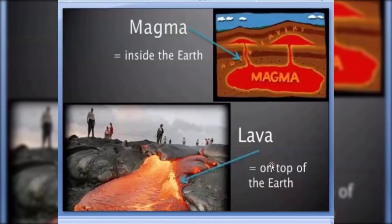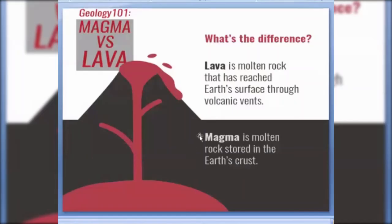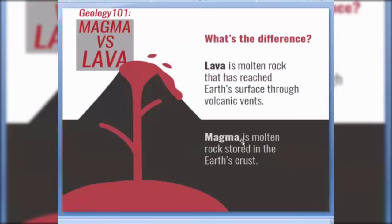Lava is the molten rock material which reaches the earth's surface through the volcanic vent. Due to volcanic eruption, when the molten rock material reaches the earth's surface and flows down, this is known as lava. When the molten rock stays within the earth's crust, it is known as magma.